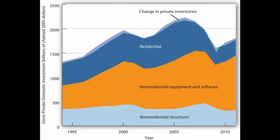Investment in the macroeconomy can take one of four broad forms: non-residential structures, residential equipment and software, residential, and private inventory changes.